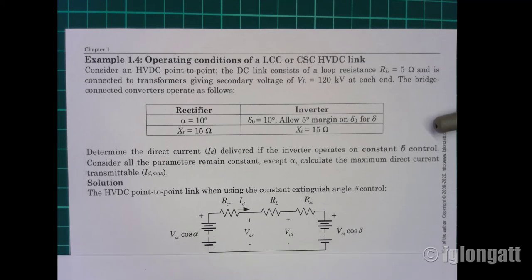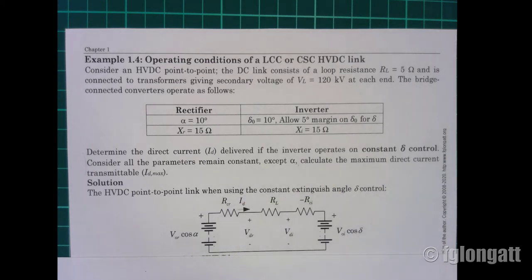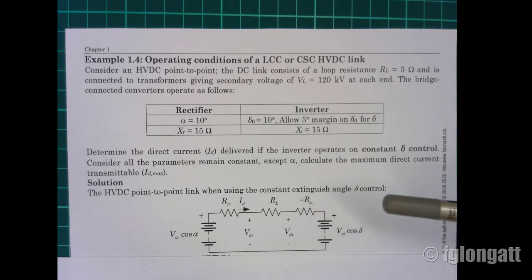Here I have the circuit representation of the DC side. We have the rectifier side and the inverter, and in this situation we are using alpha control. That is the reason we use the circuit model for the inverter where cosine of delta is located — this corresponds to the constant extinguished angle control, or constant delta control.